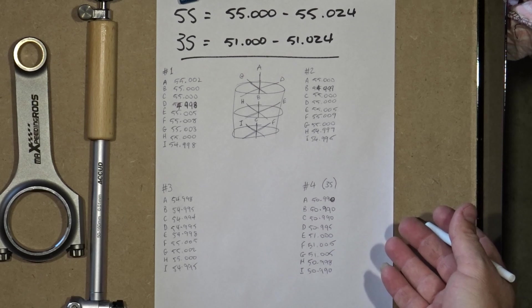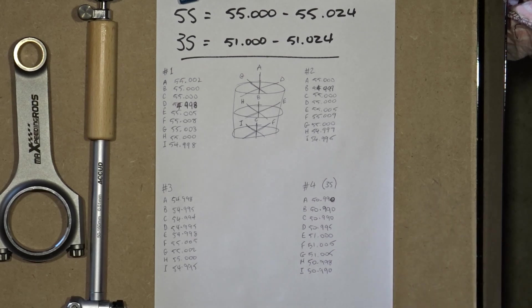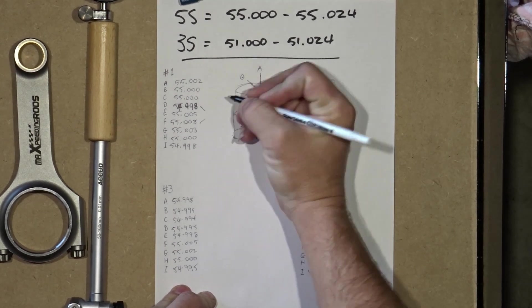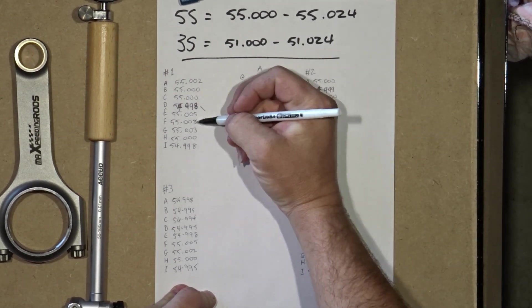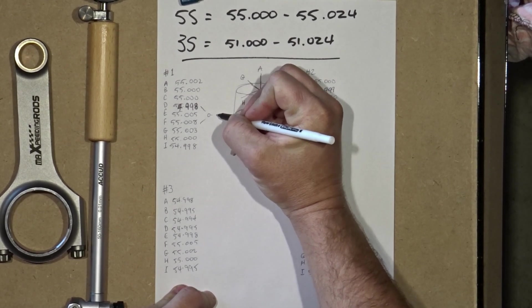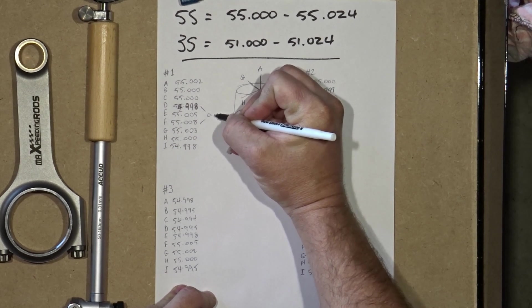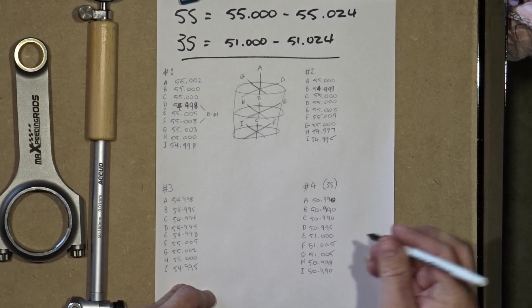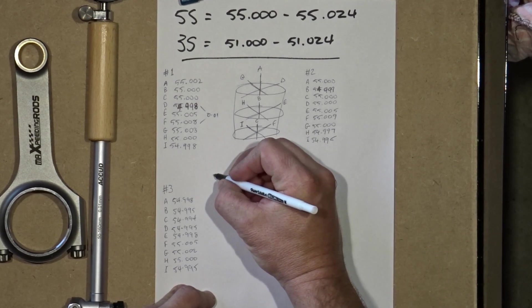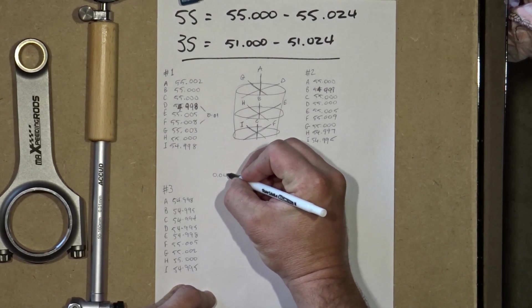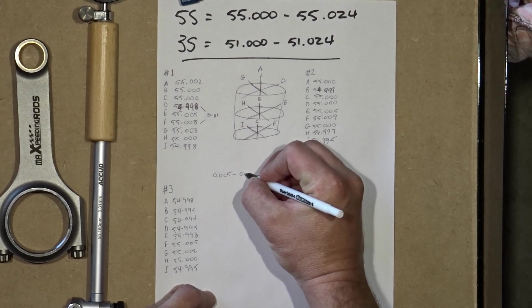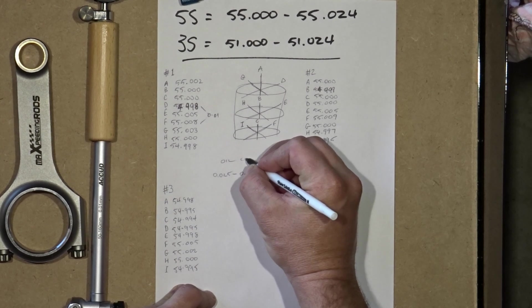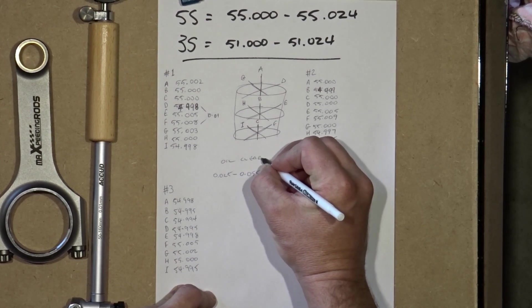Alright, let's have a little look at these measurements. Right here we've got 54.998 and 55.008, which gives us a difference of 0.01 millimeters. Almost half of the standard minimum oil clearance, not to mention that's a pretty serious taper and out of round. Additionally, the measurements on D and I are undersized, which is completely out of spec.